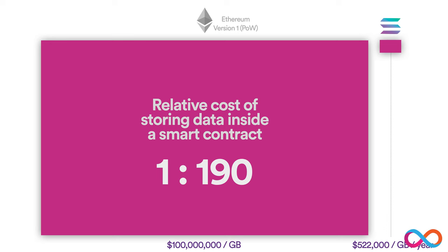The big block on the left is the relative cost of storing a gigabyte of data on the Ethereum blockchain — that's Ethereum version 1, still proof of work. It costs about 100 million dollars; it varies — today it's about 60, but it's been as high as 300 million dollars for a gigabyte. On the right is the relative cost of storing a gigabyte of data on the Solana blockchain for a year when the price of one SOL is $150. The ratio is 1 to 190, so Solana has improved efficiency or reduced the cost of storing data by 190 times.